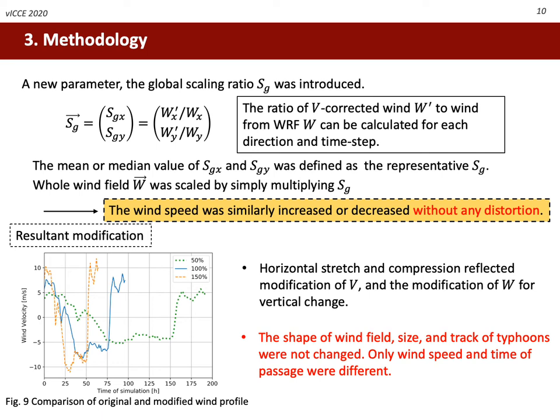The figure below describes the resultant modification to transit speed and wind field. Those three lines are originally the same, so the shape is similar — just wind speed and time passage are different. The orange line represents the 150% case; it is compressed horizontally from the original blue line, meaning the typhoon passes faster, and stretched vertically because the faster typhoon should have a stronger wind field. Similarly, the slow typhoon in the green line means weaker wind blows over a longer time.